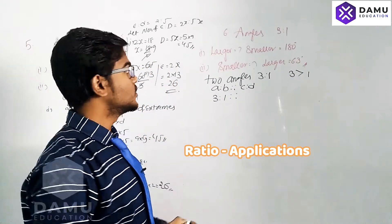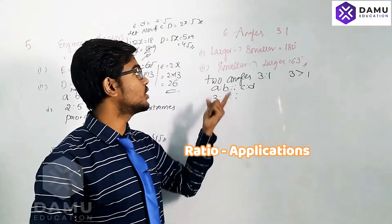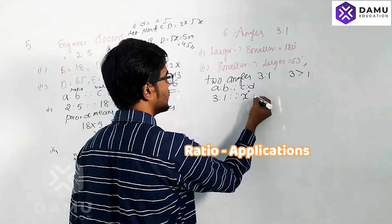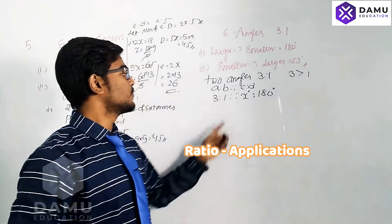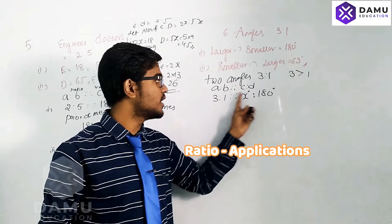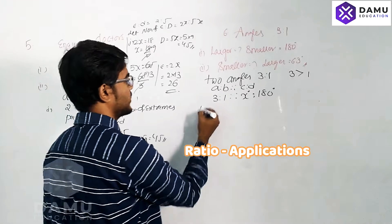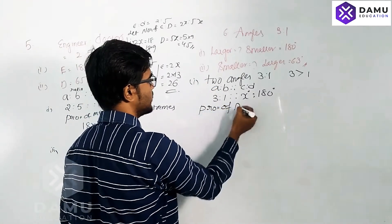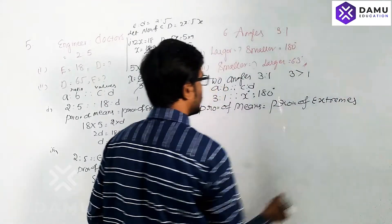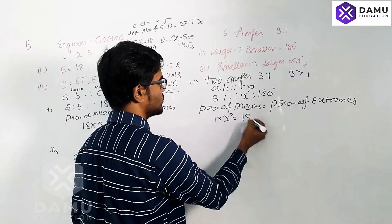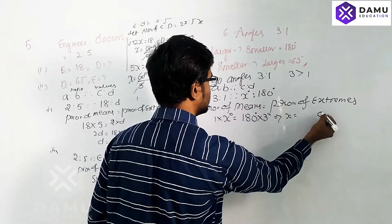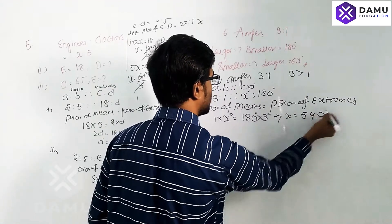The smaller angle is given as 180 degrees and the larger angle is x degrees. So 3 is to 1 as x degrees is to 180 degrees. Product of means equals product of extremes: 1 into x equals 180 into 3 degrees. So x equals 540 degrees.